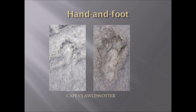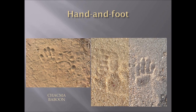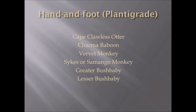Hand and foot tracks are tracks that look like a hand or footprint. Here you can see the hand and foot tracks of the Cape clawless otter. Baboons will typically place their front foot down and the opposite back foot will land right next to the front foot in a normal gait, often obscuring the thumb of the front foot. In the left picture you can see the left front foot on the left-hand side and the right foot stepping over the edge of the thumb. Examples of hand and foot plantigrade tracks include Cape clawless otter, monkeys or primates such as vervet monkey, Sykes or Samango monkeys, and the greater bushbaby.